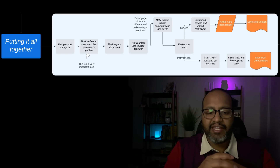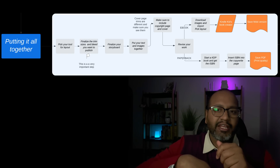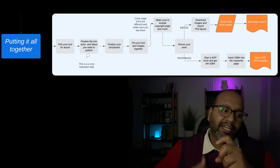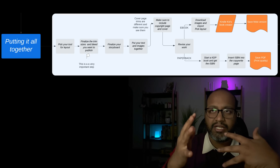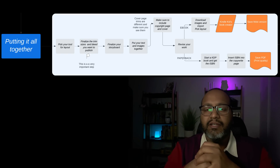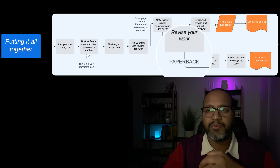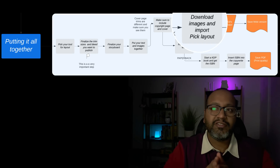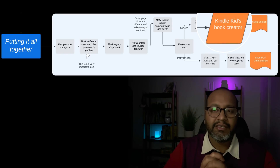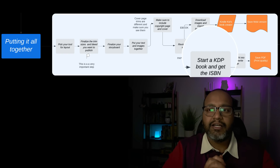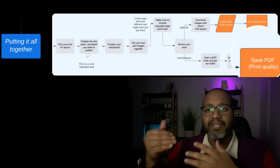Once you have that done, you want to revise your work. You may also want to look into ISBN numbers, which I cover in the publishing stage — you'll need to come back and add those ISBN numbers to the copyright page. From there you have two pathways: the ebook pathway, and the paperback and hardcover pathway. For the ebook, download your images and import them into Kindle Book Creator to make your .mobi file. For the paperback, export a print-quality PDF from your layout.